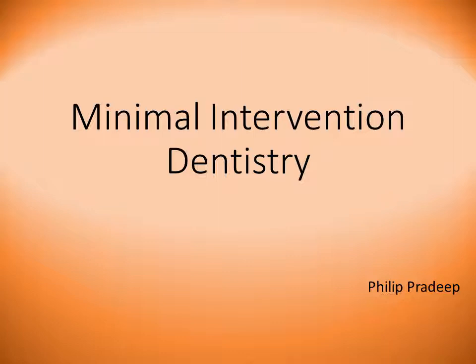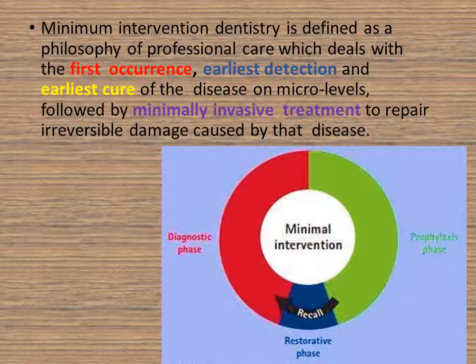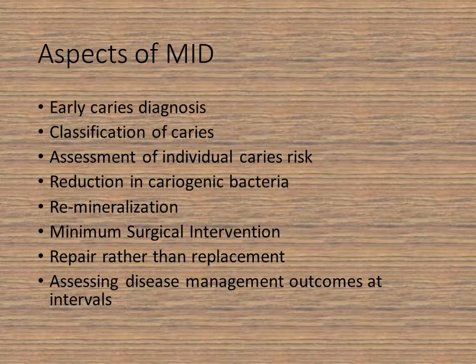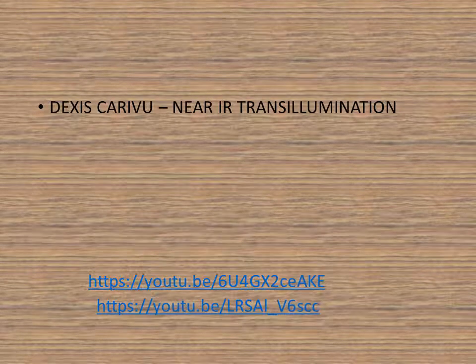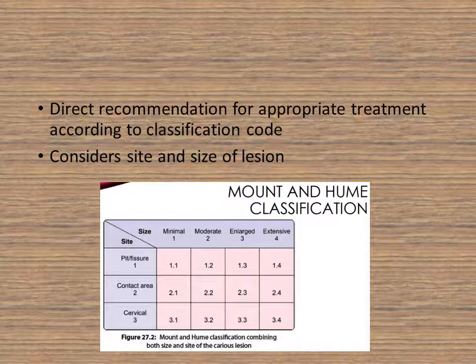Just a brief recap before I go on to the second part. In the last lecture we discussed the basics of minimal intervention dentistry — it is defined as the philosophy of care which deals with the occurrence, detection, and earliest cure of disease on microscopic levels, followed by minimally invasive treatment to repair damage caused by the disease. The aspects covered included how to detect and diagnose using tools like DEXIS and Carivu, and the classification of lesions based on site and size given by Mount and Hume.